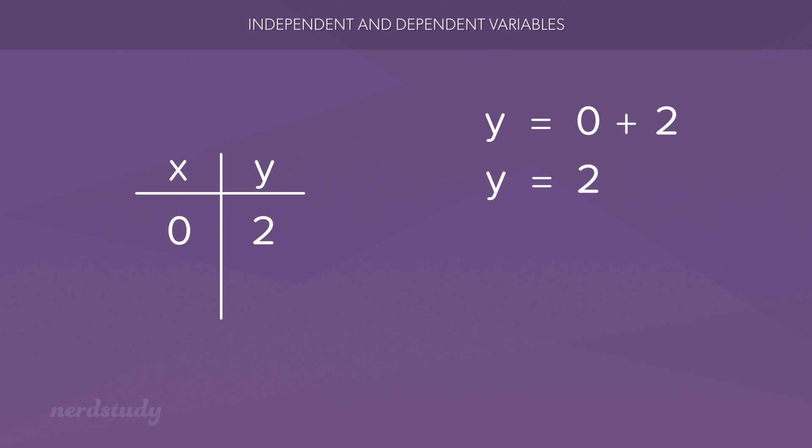We might further wonder to ourselves what y becomes when x is 1. And of course, y becomes 3. So, in this particular example, as we increased our independent variable, the x, from 0 to 1, our dependent variable, the y, also increased from 2 to 3.